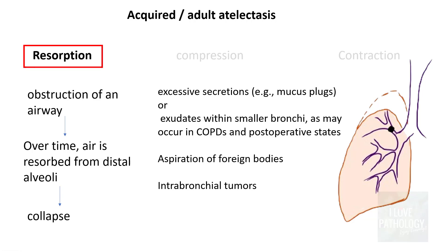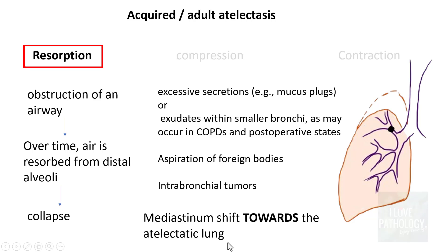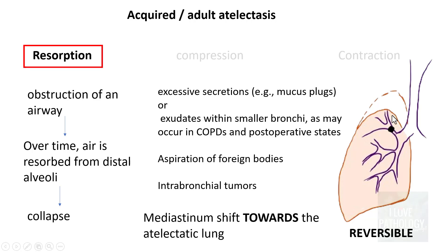Resorption atelectasis is almost always caused by airway obstruction. An important diagnostic radiological feature is that the mediastinum shifts towards the atelectatic lung. If the obstruction is relieved, the lung parenchyma can revert back to normal, making resorption atelectasis a reversible condition.